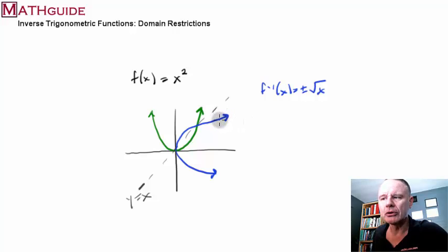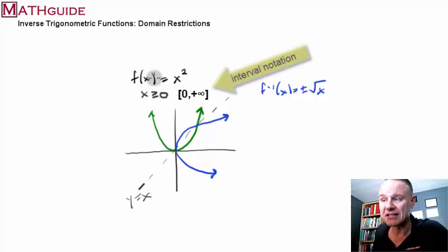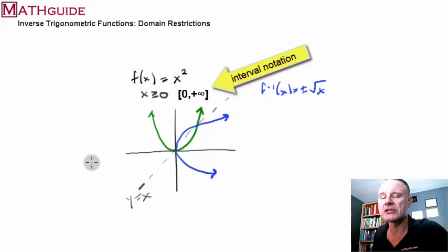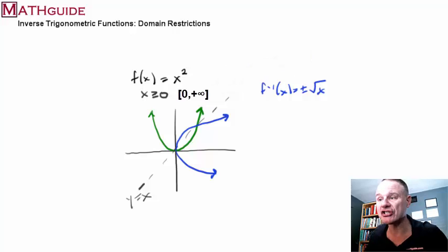Okay, what do we do so that when we take the inverse of the square curve, we also get a function? We restrict the domain. Okay, so, what I'm going to do now is I'm going to take the original function and I'm going to insist, for instance, that the x values be greater than or equal to zero. Now, what that does is it changes the graph. So, now the original curve only has one branch.